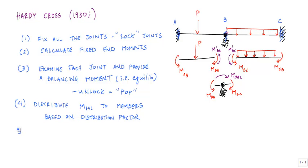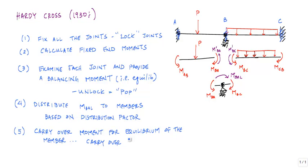You also have to ensure equilibrium of each of the members, and that requires what's called a carryover. This is the carryover factor — a portion of the distributed moment that gets carried over to the other side of the member. So M-BA-prime gets carried over to produce M-AB double-prime, and M-BC-prime gets carried over to produce M-CB double-prime. This is the carryover moment. Once you carry this over, you're locking again — this is kind of a second lock.